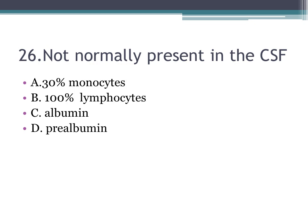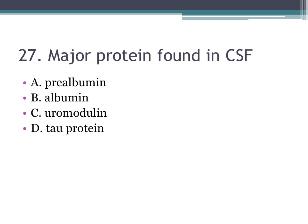Number twenty-six: not normally present in CSF — A. 30% monocytes, B. 100% lymphocytes, C. albumin, D. prealbumin. The correct answer is B, 100% lymphocytes. The normal CSF differential is 70% lymphocytes and 30% monocytes.